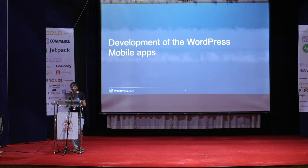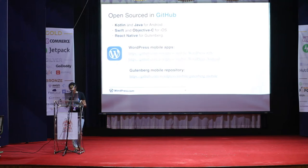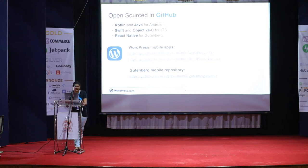Now that we know what features are being worked on in the app, I want to talk a little bit about how the mobile apps are built. Our development is on GitHub — it's open source and licensed under GPL. We have a separate project for each of the platforms, including the Gutenberg mobile project for the Gutenberg mobile editor. The development language for Android right now is Kotlin, for iOS it's Swift, and for Gutenberg it's React Native. As I mentioned before, the mobile apps have been around for a while, so we do have a lot of legacy code — in Android it's Java, and in iOS it's Objective-C.